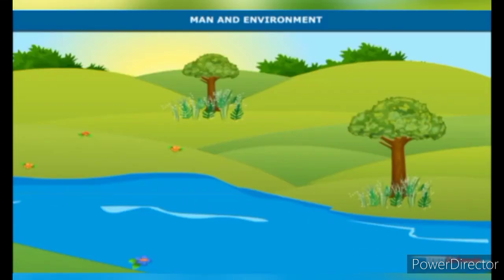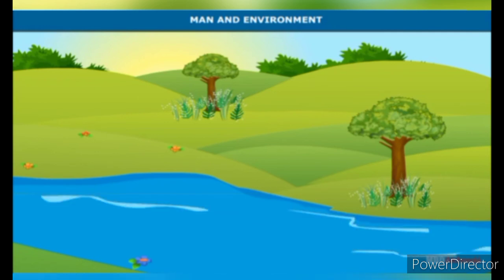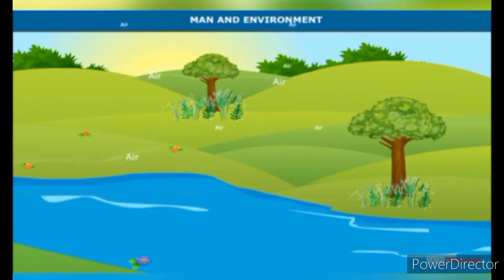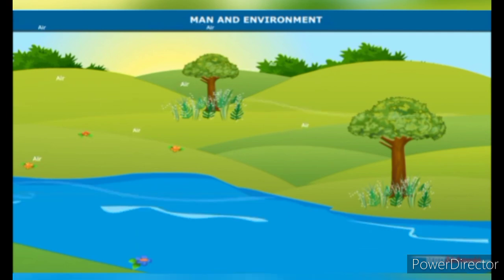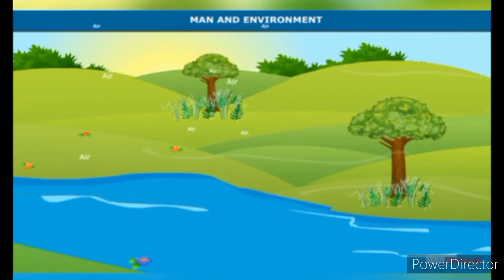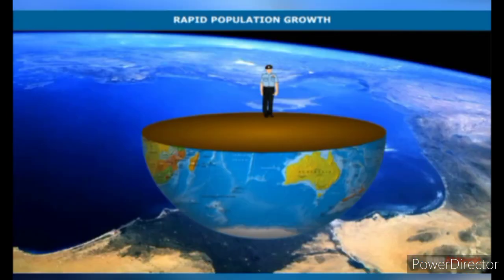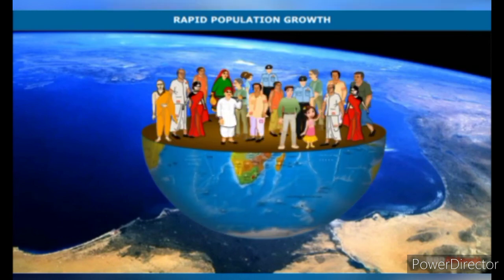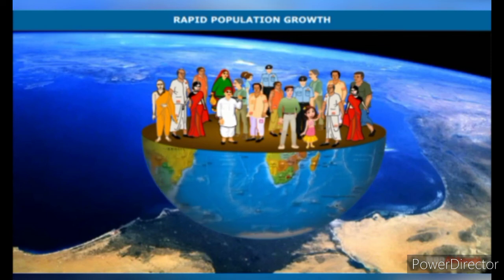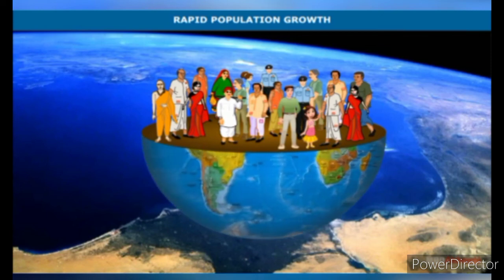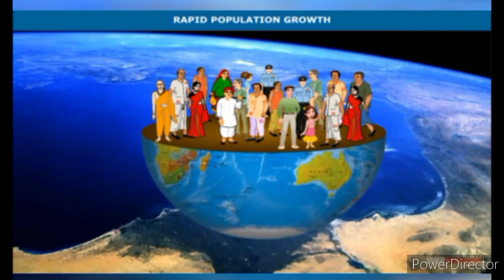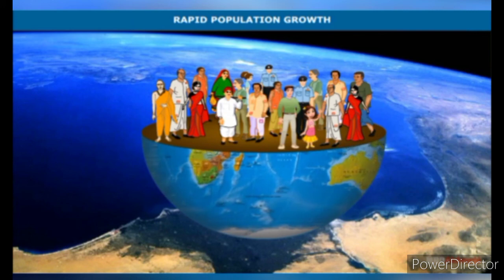Land, air, and water — including the landforms, plants, and animals that surround us — together constitute the physical environment. The world population keeps doubling every 15 to 20 years. Since the land area is the same and other resources are scarce, this puts a heavy pressure on land.